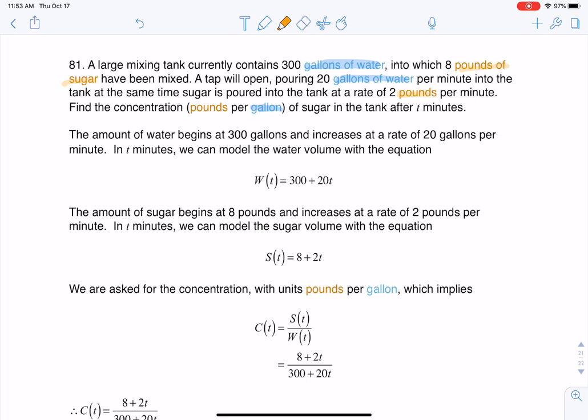So this tank is getting filled. It started with 300 gallons of water and it's filling with sugar and more water. And it says find the concentration in pounds per gallon. Now anytime you see this word 'per', that's like saying let's make a ratio or a fraction. And since we're talking about rational functions in this section, that's where the fraction is coming from.